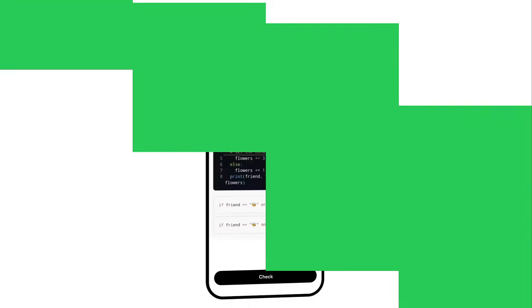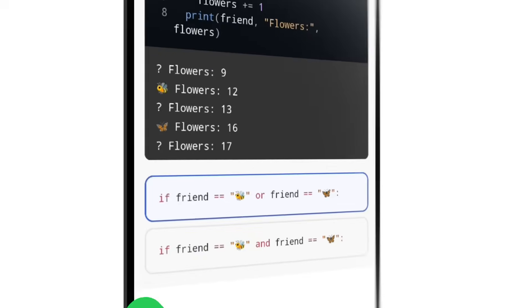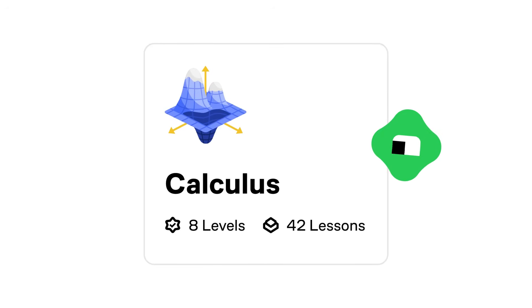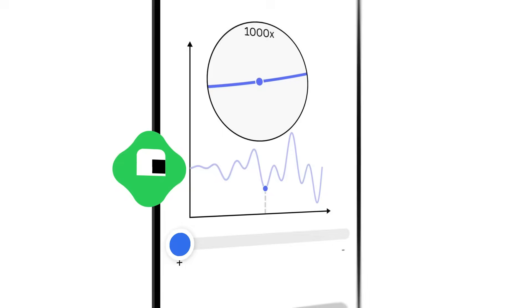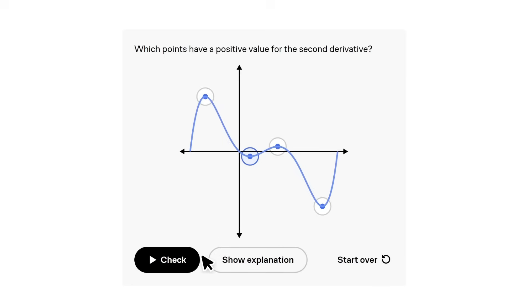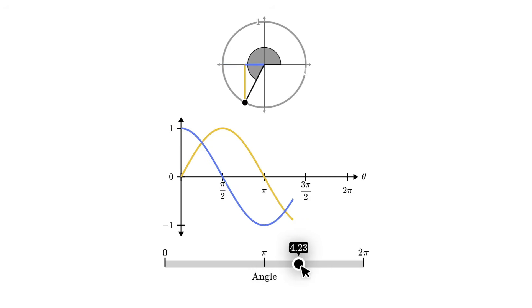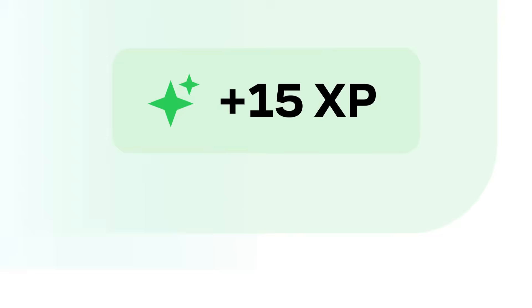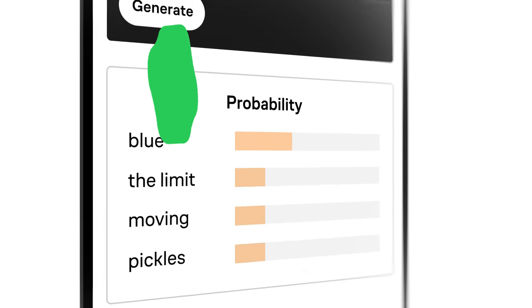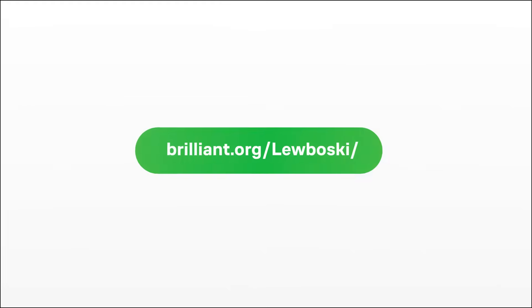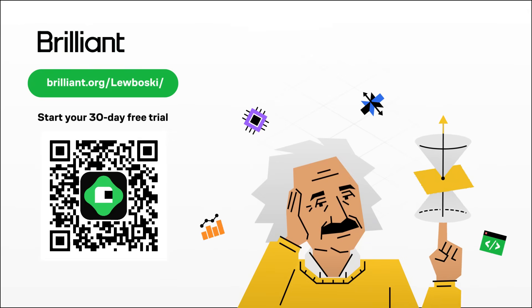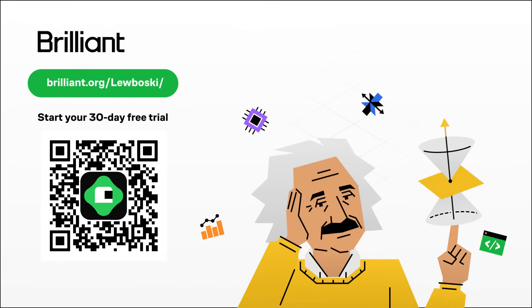If you're having a hard time understanding what a build system is, Brilliant is perfect for you. Brilliant allows you to choose from a broad array of topics, from computer science to math, to problem solving, and more — with thousands of interactive lessons to help you get started and learn advanced topics about programming. Its lessons help you build your critical thinking skills through problem solving, not memorizing. To try everything for free for a full 30 days, visit brilliant.org/lewoski, or scan the QR code on screen, or click the link in the description. You'll also get 20% off an annual premium subscription.